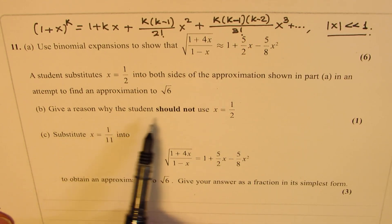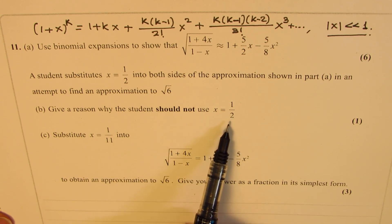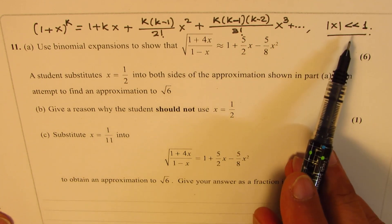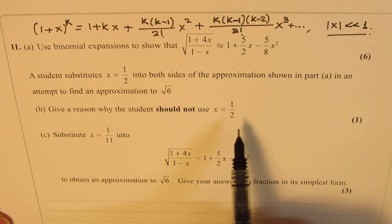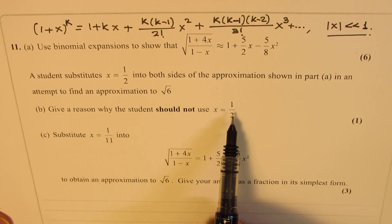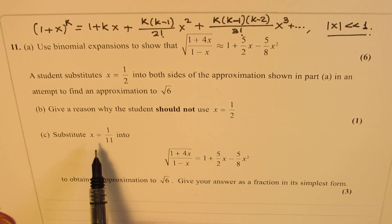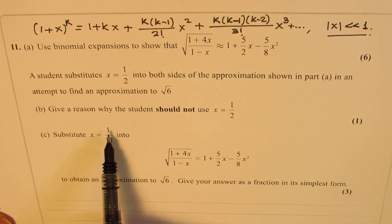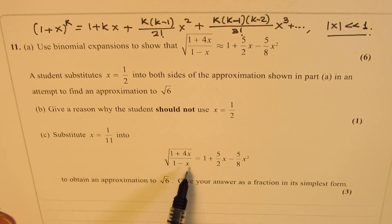The reason why a student should not use x equals one half is that one half is not very, very small compared to 1. The value should be something like 0.1 or lower. When we substitute x equals 1 over 11, it is less than 0.1, so it works.